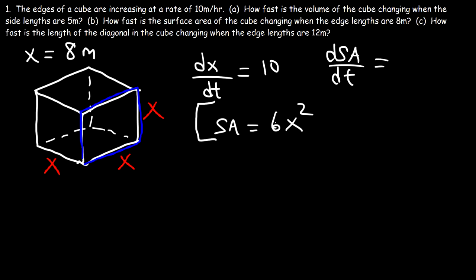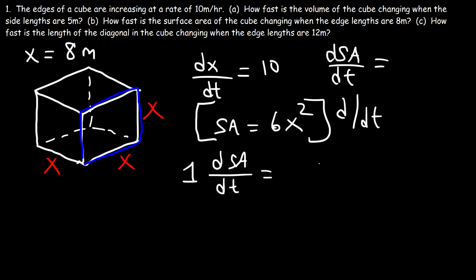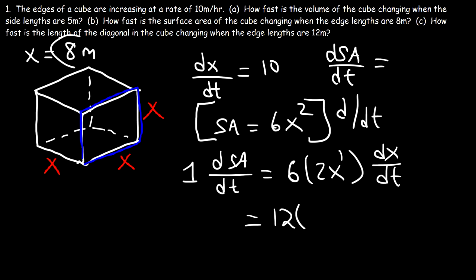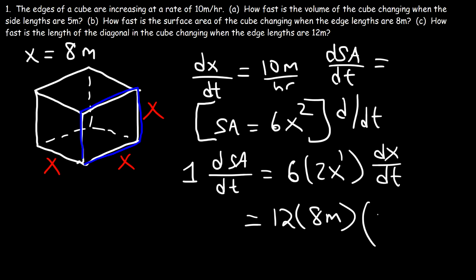Let's find the derivative of both sides of the equation with respect to t. The derivative of SA is ds/dt. On the right side, using the constant multiple rule and the power rule, the derivative of 6x² is 6 times 2x times dx/dt, which gives 12x · dx/dt. Plugging in x = 8 meters and dx/dt = 10 meters per hour: 12 times 8 is 96, and 96 times 10 is 960.